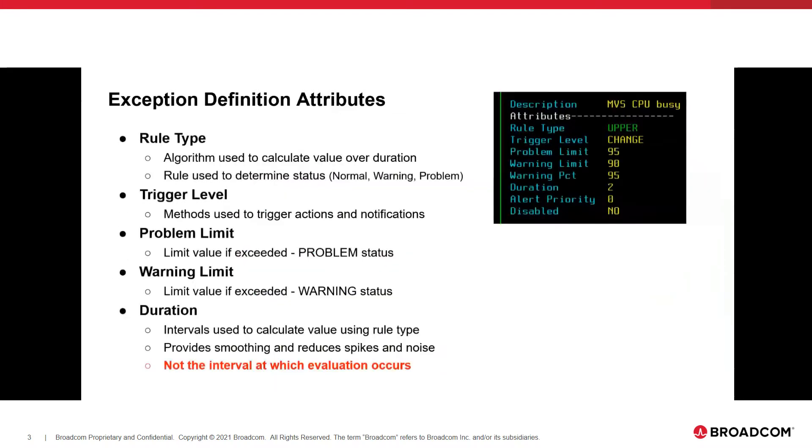As kind of a quick dictionary lesson here, what is a rule type? Essentially, a rule type is the algorithm used to calculate the value over a duration. A rule is used to also determine the status, or somebody might say the color of that, the status of a metric. So we're going to compute a value over a period of time that will then be used to determine the evaluation of that metric and its associated thresholds. And we will assign a rule type, and we will assign a status, which is typically normal, warning, or problem.